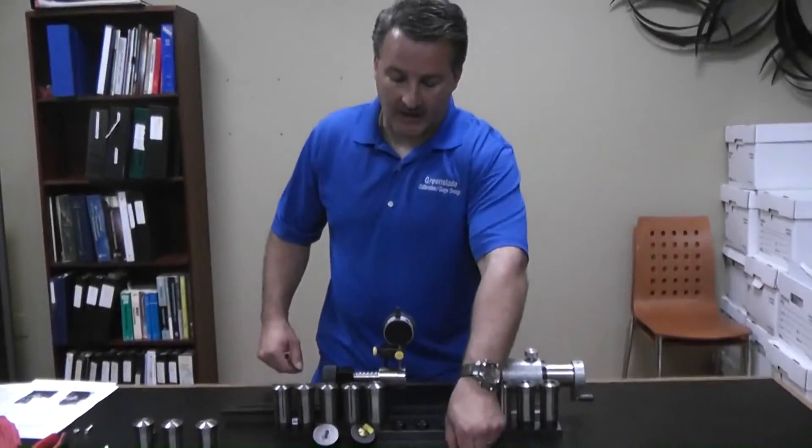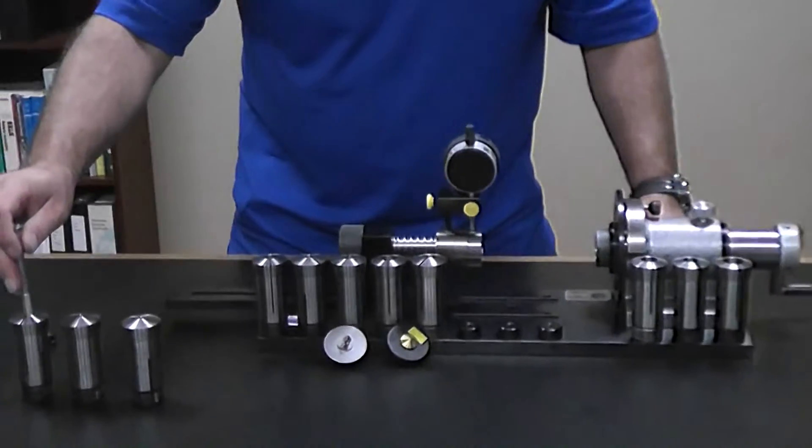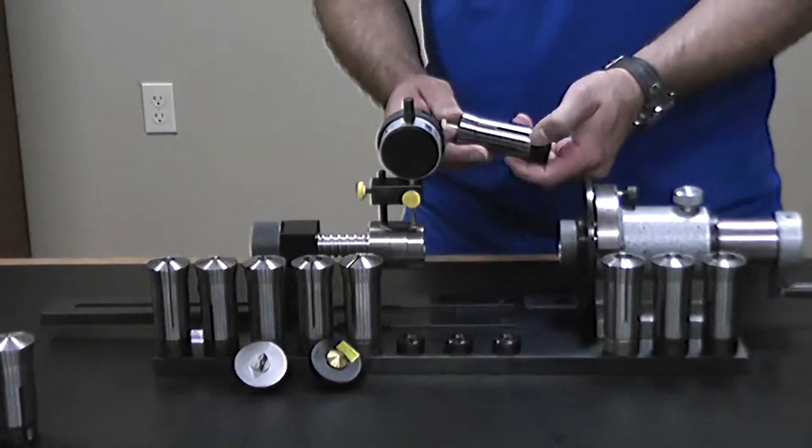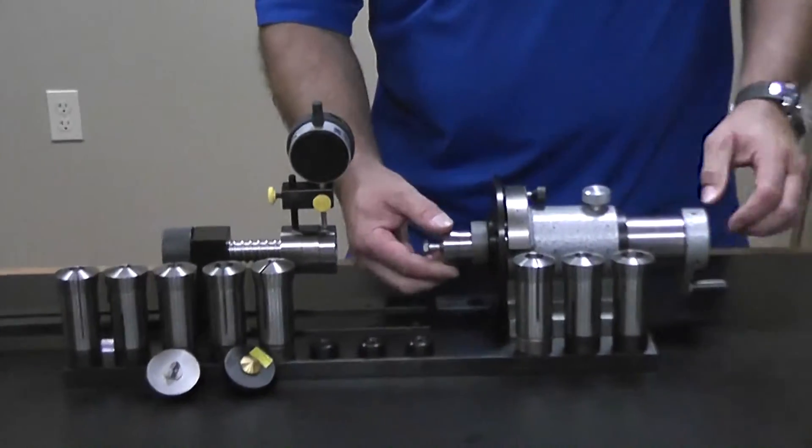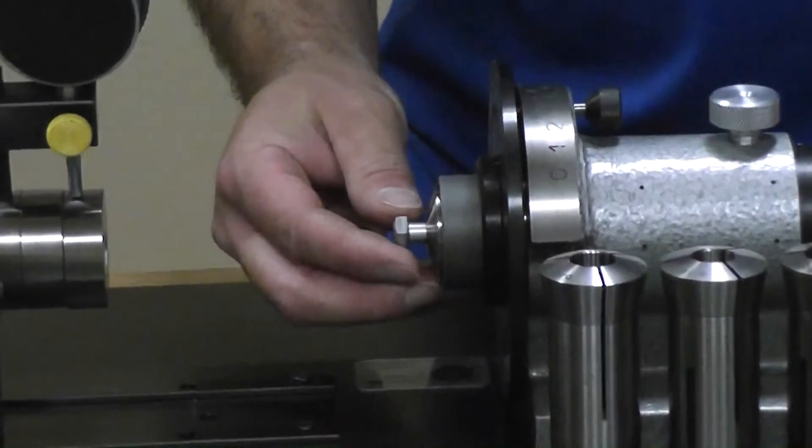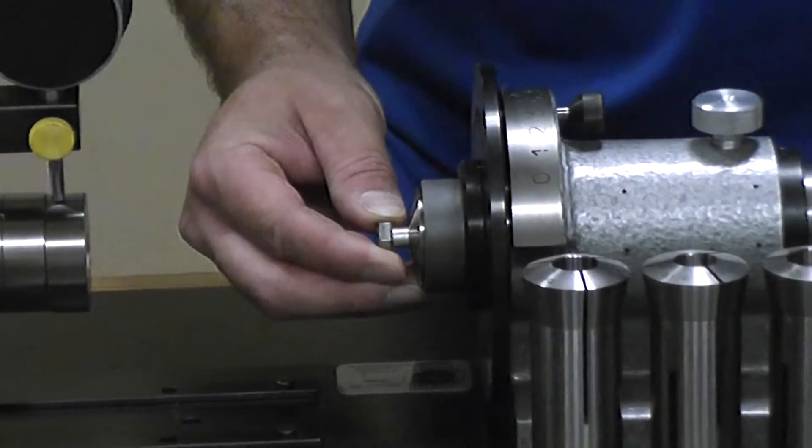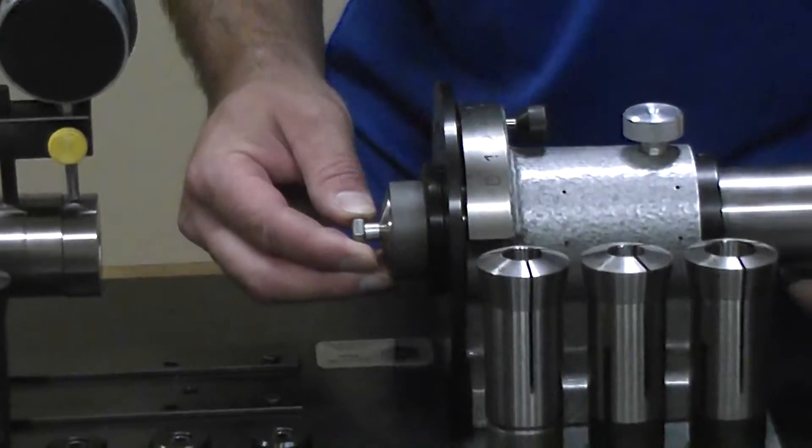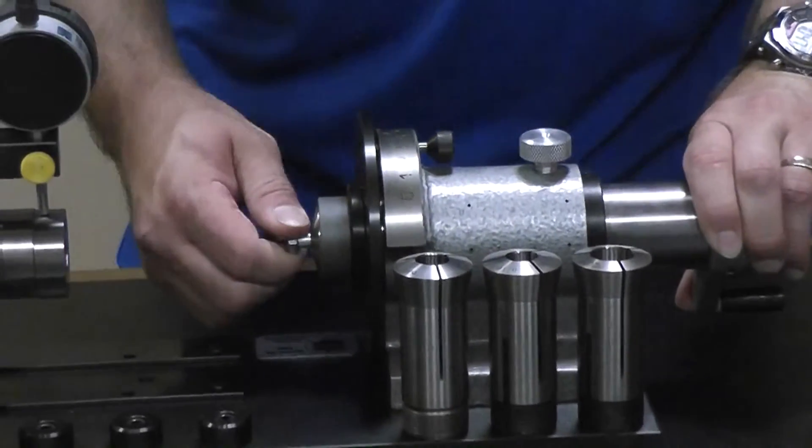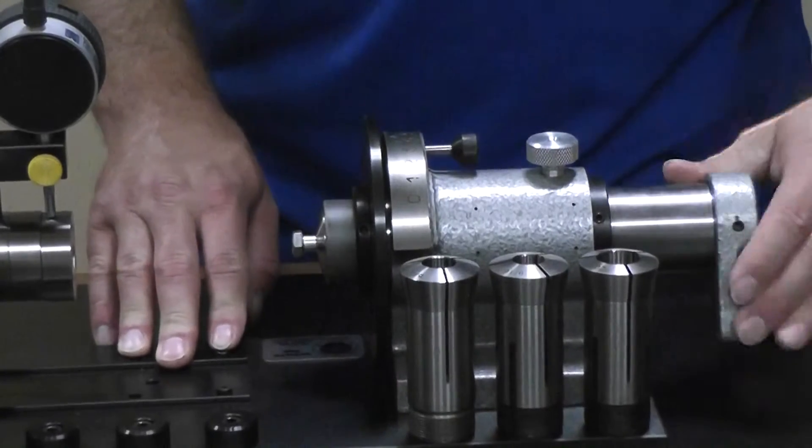So now we have to find out which collet best supports our fastener being measured. And again, we've got the slot that lines up. We place that into position. We stick out approximately one times the diameter. We tighten it down until it doesn't move anymore. We back out our stop pin. It gives us the ability to rotate.